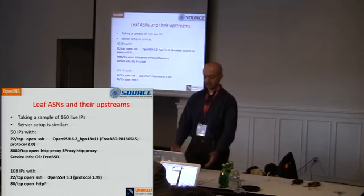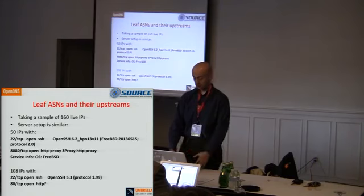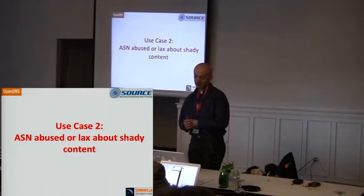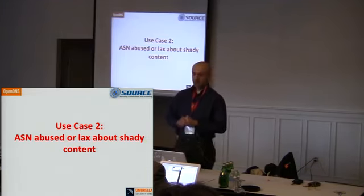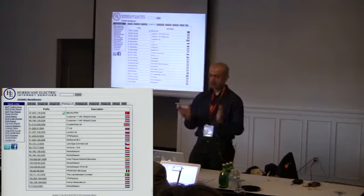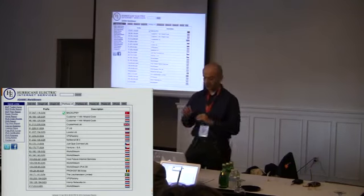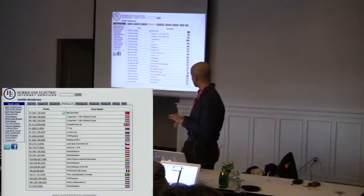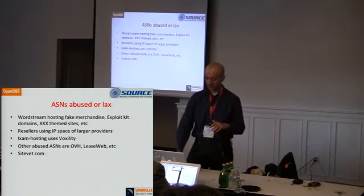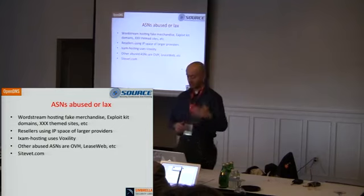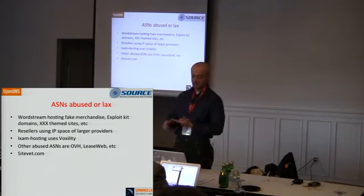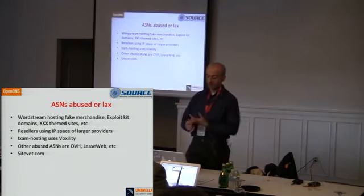Later on, domains are registered and made to point to those IPs, then the attack is delivered — could be spam, phishing, or other types. Now let's take the case of ASNs that are abused or lax about shady content they host. WorldStream, from the Netherlands, is a popular hosting provider. If you explore their IP space, they host legitimate content but also a lot of shady stuff — fake merchandise, exploiting domains, porn sites, spam, all kinds of things.